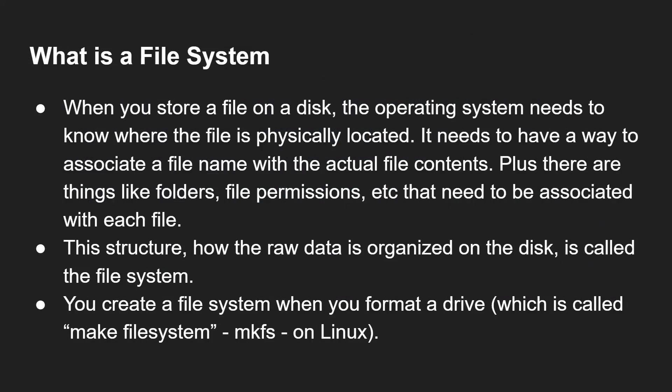When you store a file on a disk, the operating system needs to know where the file is physically located. It needs to have a way to associate a file name with the file contents, plus there might be other things like folders, file permissions, etc. that need to be associated with each file. This structure — how the raw data is organized on the disk — is called a file system. You create a file system when you format a drive, which in the Linux world would be makefilesystem or MKFS. Format and makefilesystem are synonymous in this context.